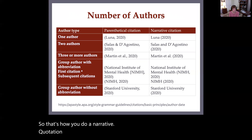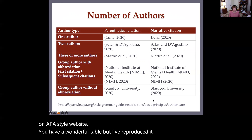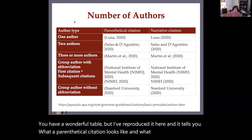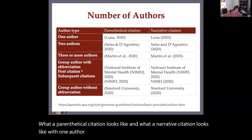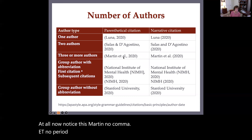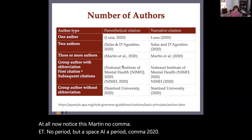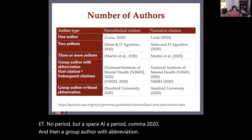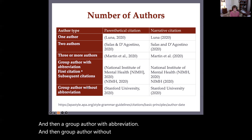On the APA style website there is a wonderful table — I've reproduced it here. It tells you what a parenthetical citation and a narrative citation look like with one author, two authors, three or more, and so on. Notice: Martin, no comma, et — no period — but a space, al., a period, comma, 2020. Also shown are group author with abbreviation, group author without abbreviation, and secondary sources.